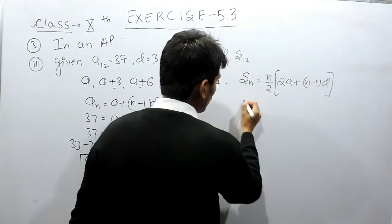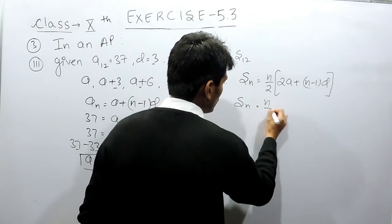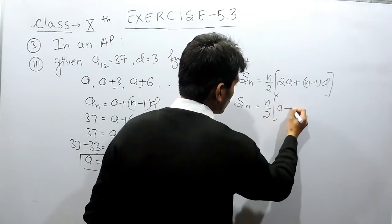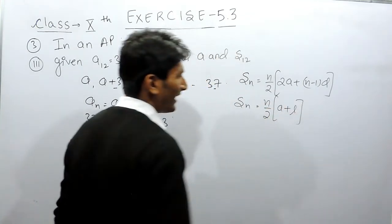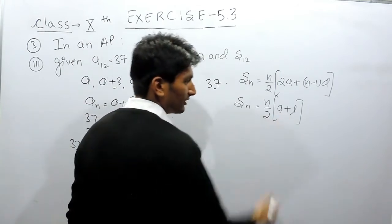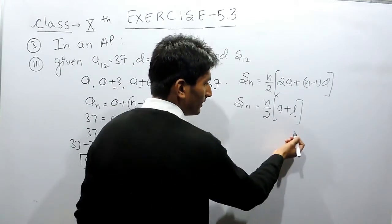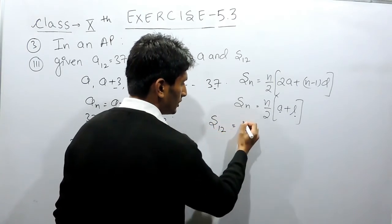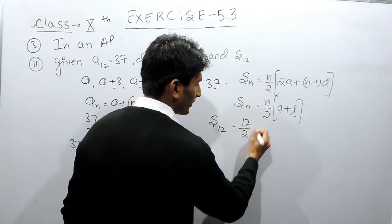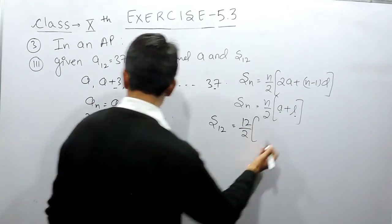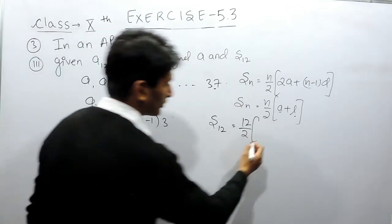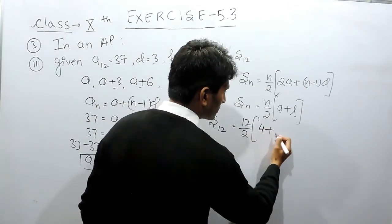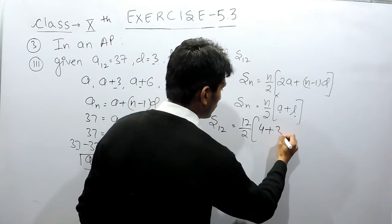So to find out the sum of n terms we have a formula, or if you know the first and the last term you can use this formula also to find out the sum of n terms. Here A is the first term and L is the last term. So you have to find the sum of 12 terms, so the number of terms are 12, and the first term here is 4 we have just found out, and the last term here is equal to 37.